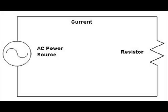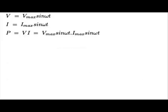Now, coming to the resistive load circuit — if we multiply the voltage waveform with the current waveform, we will get the power waveform. For that, we will consider the voltage waveform as Vmax·sin(ωt) and the current waveform as Imax·sin(ωt). And if we multiply them, we will get power P = Vmax·sin(ωt) × Imax·sin(ωt).